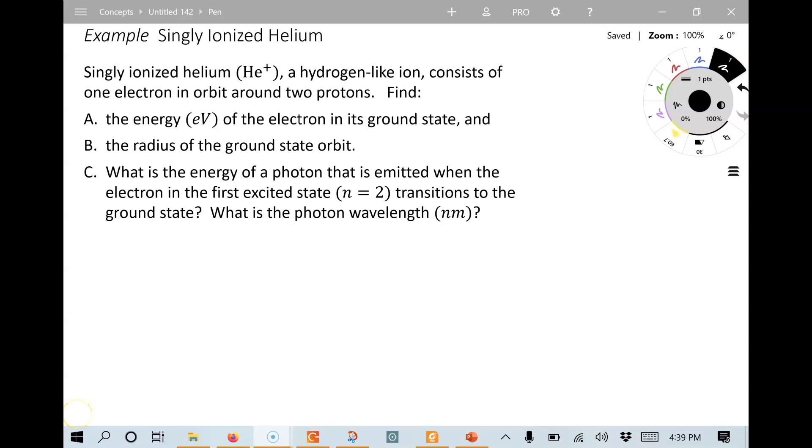Hi, this is an example problem about a singly ionized helium. This is from chapter 30. So helium, a helium ion, is one that has two protons and one electron. Since it has one electron, it's kind of like hydrogen, which also has one electron, and so we call it a hydrogen-like ion. Helium again has two protons, and so we can't use the exact same energy level diagrams we did for hydrogen.